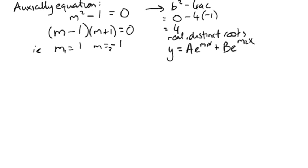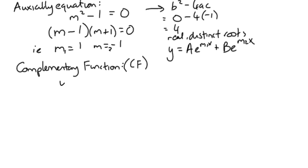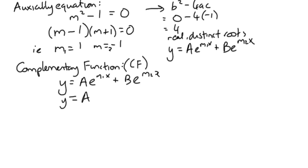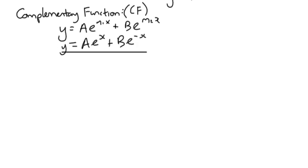Because the equation is non-homogeneous, our first part of the solution is going to be the complementary function, taking the form y equals Ae^(m₁x) plus Be^(m₂x). With m₁ equal to 1 and m₂ equal to negative 1, we end up with y equals Ae^x plus Be^(-x) as our complementary function. There's no difference there to any of the other solutions we've done. Now since it's non-homogeneous, we consider a particular integral.